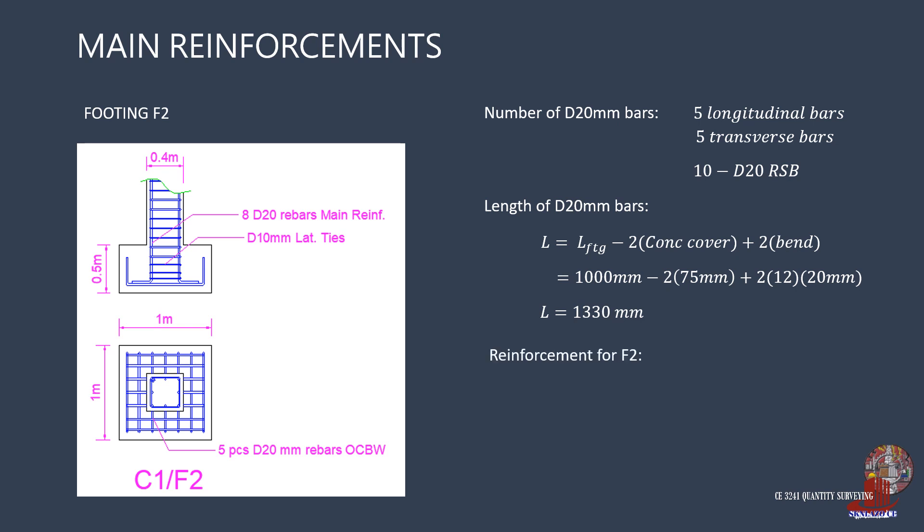The total rebars required for F2 is computed as 4 footings of 10 bars each, which gives 40 D20mm RSB by 1330mm.